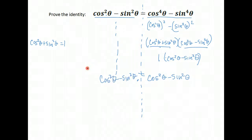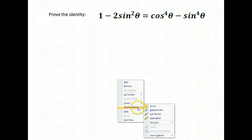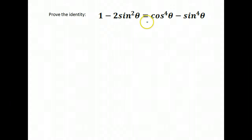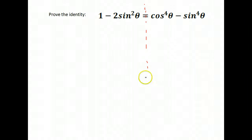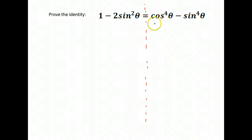This next problem looks a bit like our previous question. We still have cosine to the fourth minus sine to the fourth on one side. On the left hand side we have one minus two sine squared theta. We want to show those two sides are equivalent using algebra and trig identities. Notice we have squared terms on one side and fourth powers on the other, so again we want to break the fourth powers down to squares.